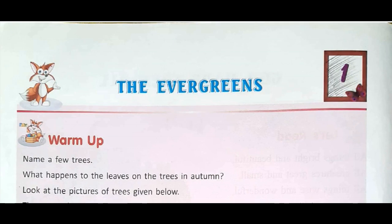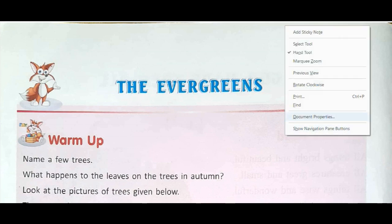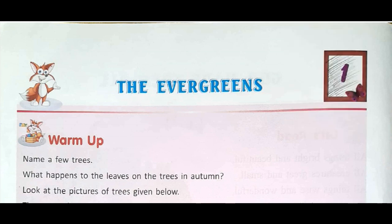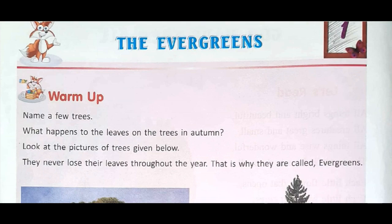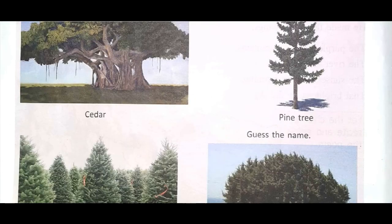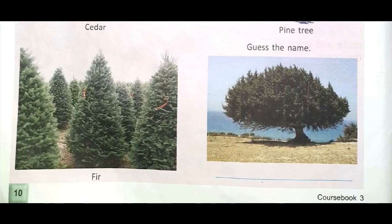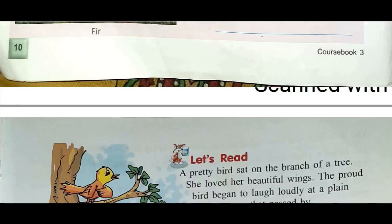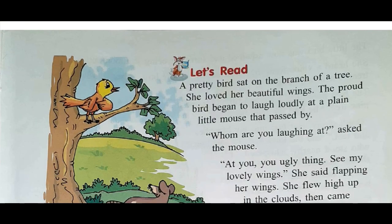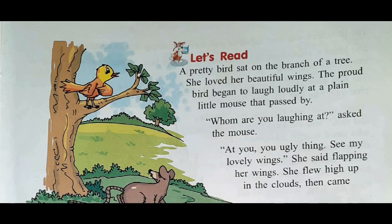Good morning children. Today I am going to take the first chapter of your English reader, The Evergreen. This is the story of a little bird who was very proud of her beautiful wings. I will read the chapter and give you the paragraph-wise explanation.